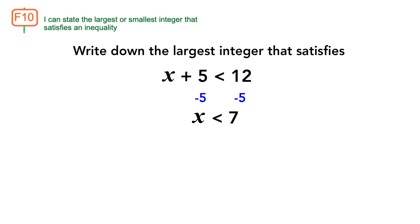Then we analyze the inequality, x is less than 7. What integers are less than 7? All the values smaller than 7. So the integer that is the largest of that group of values must be 6.